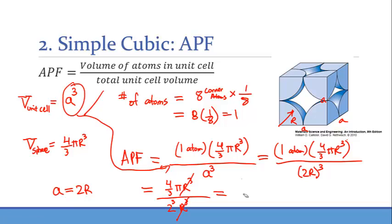So let's simplify, the rest is just algebra. The r cubed variable is canceled out. So what we'll have is 4 pi over 3 times 2 cubed, which is the same thing as 8. Let me simplify this even further, you get pi over 6, which is approximately equal to 0.52. So 0.52, or essentially what this says, if you multiply by 100, the atoms make up about 52% of the total volume of the unit cell.